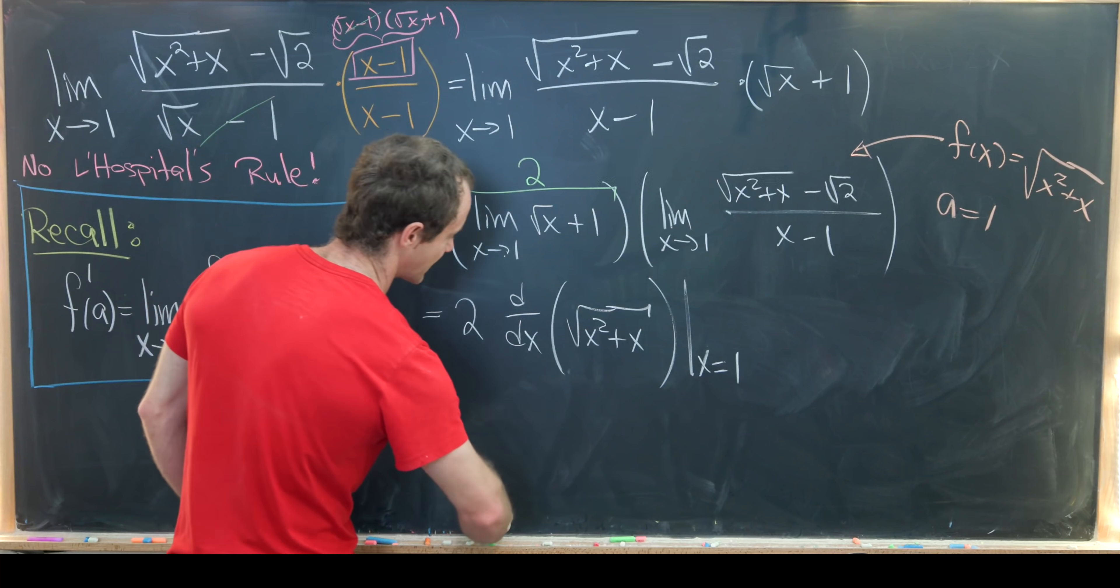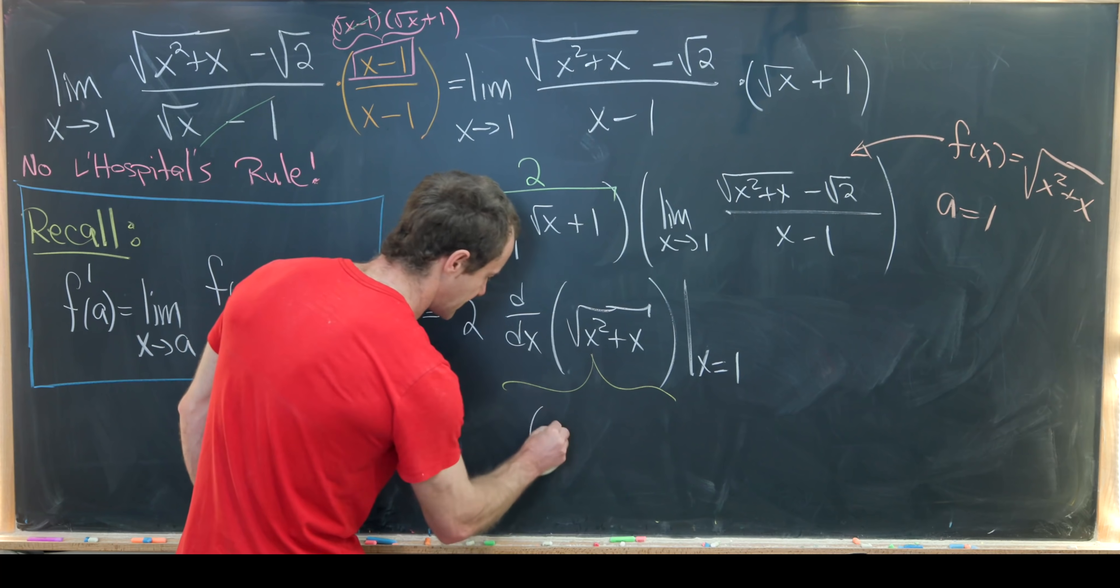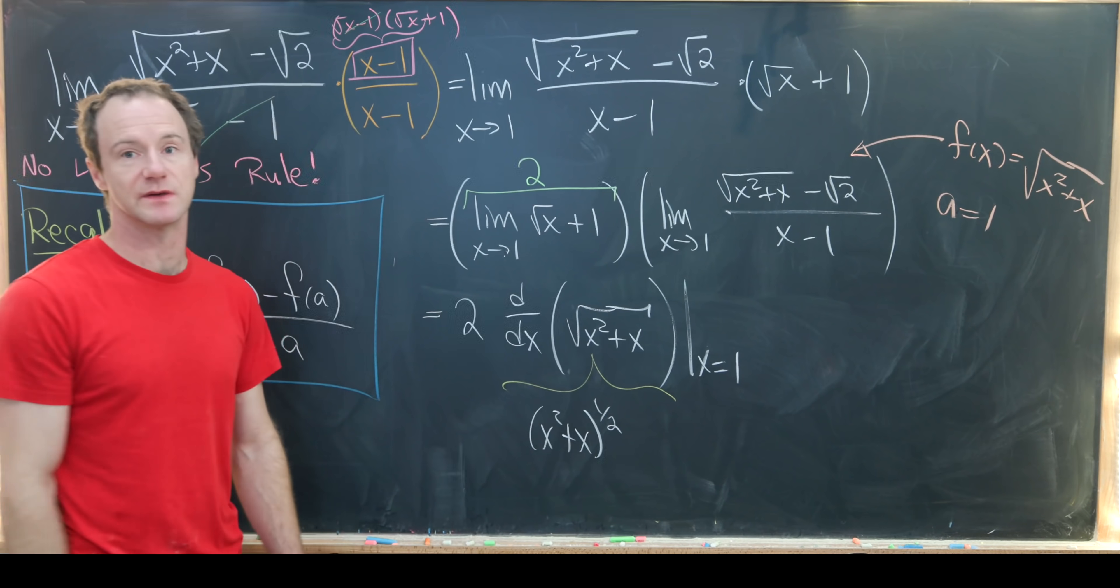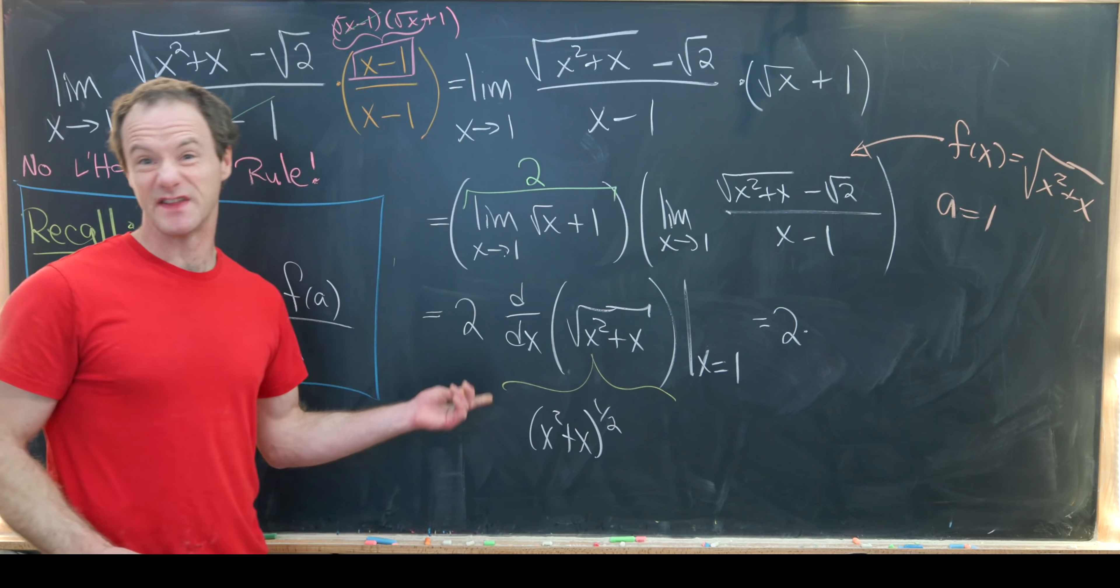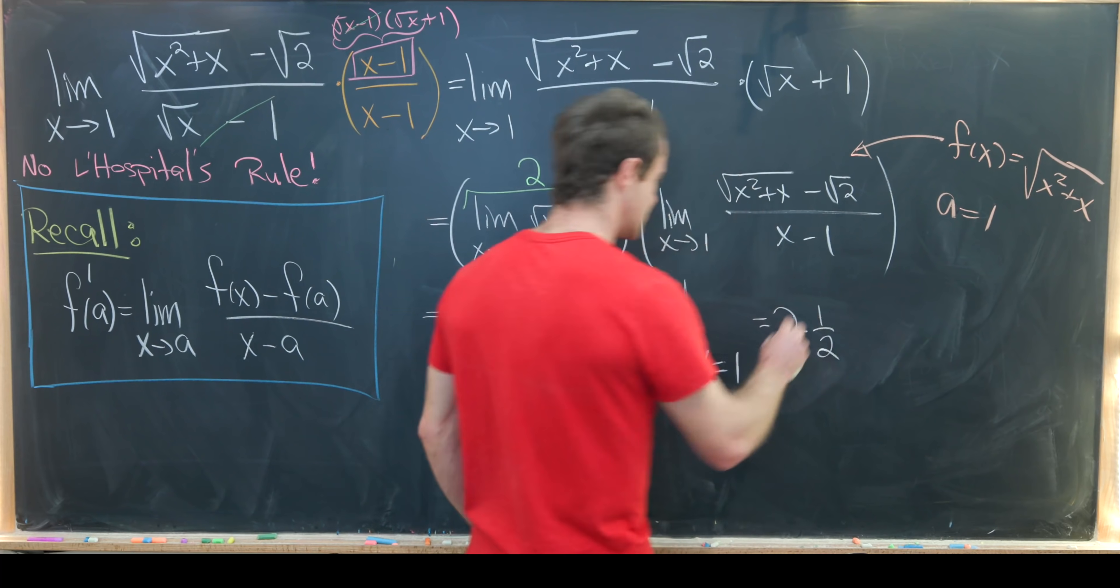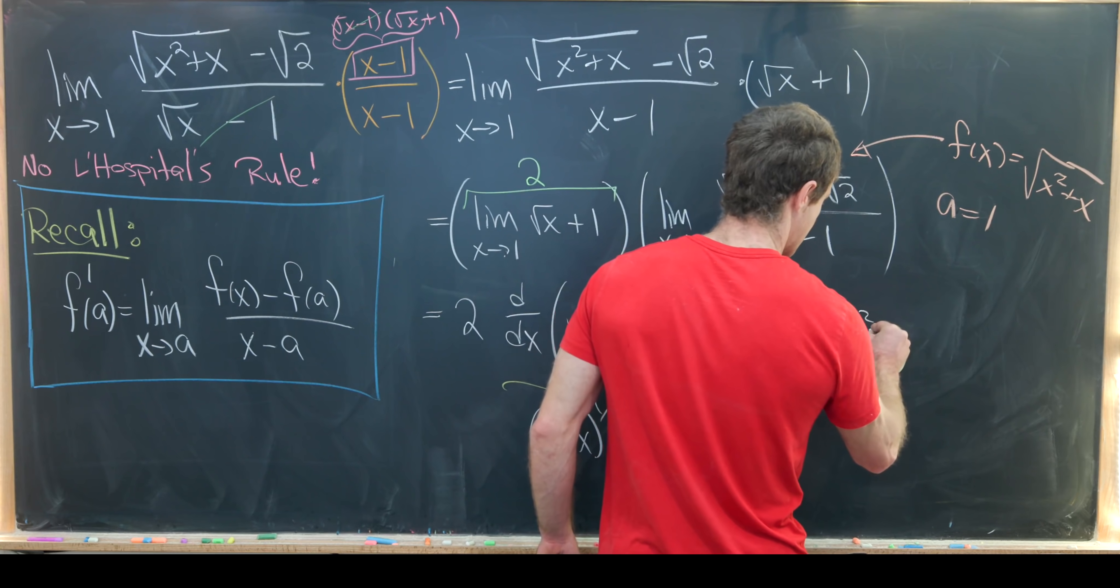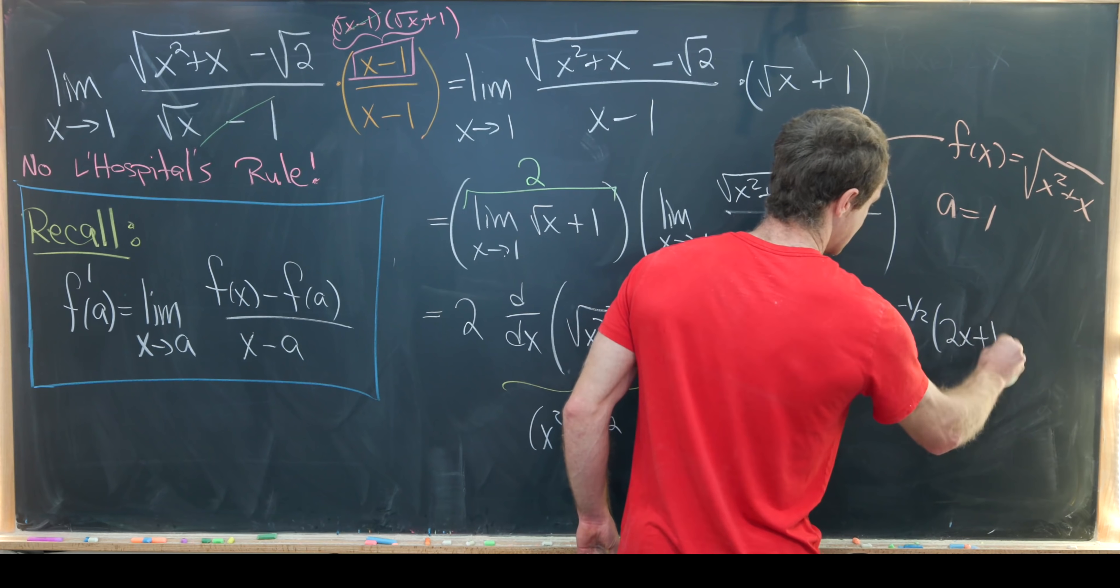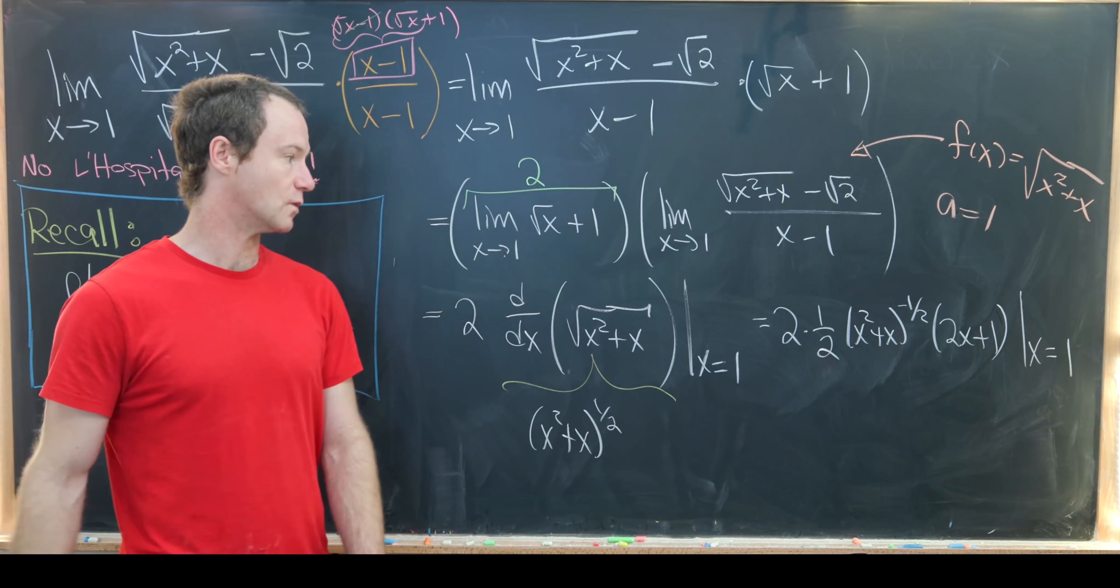Now we need to take the derivative of this term. That's probably easiest to do if we rewrite this as x squared plus x to the half power so that we can use the power rule. Using the generalized power rule or the chain rule, we can bring the half out front. So bringing the half out front, then we'll have x squared plus x to the minus half. And then the derivative of the inside, which is 2x plus 1, then we need to evaluate this at x equals 1.